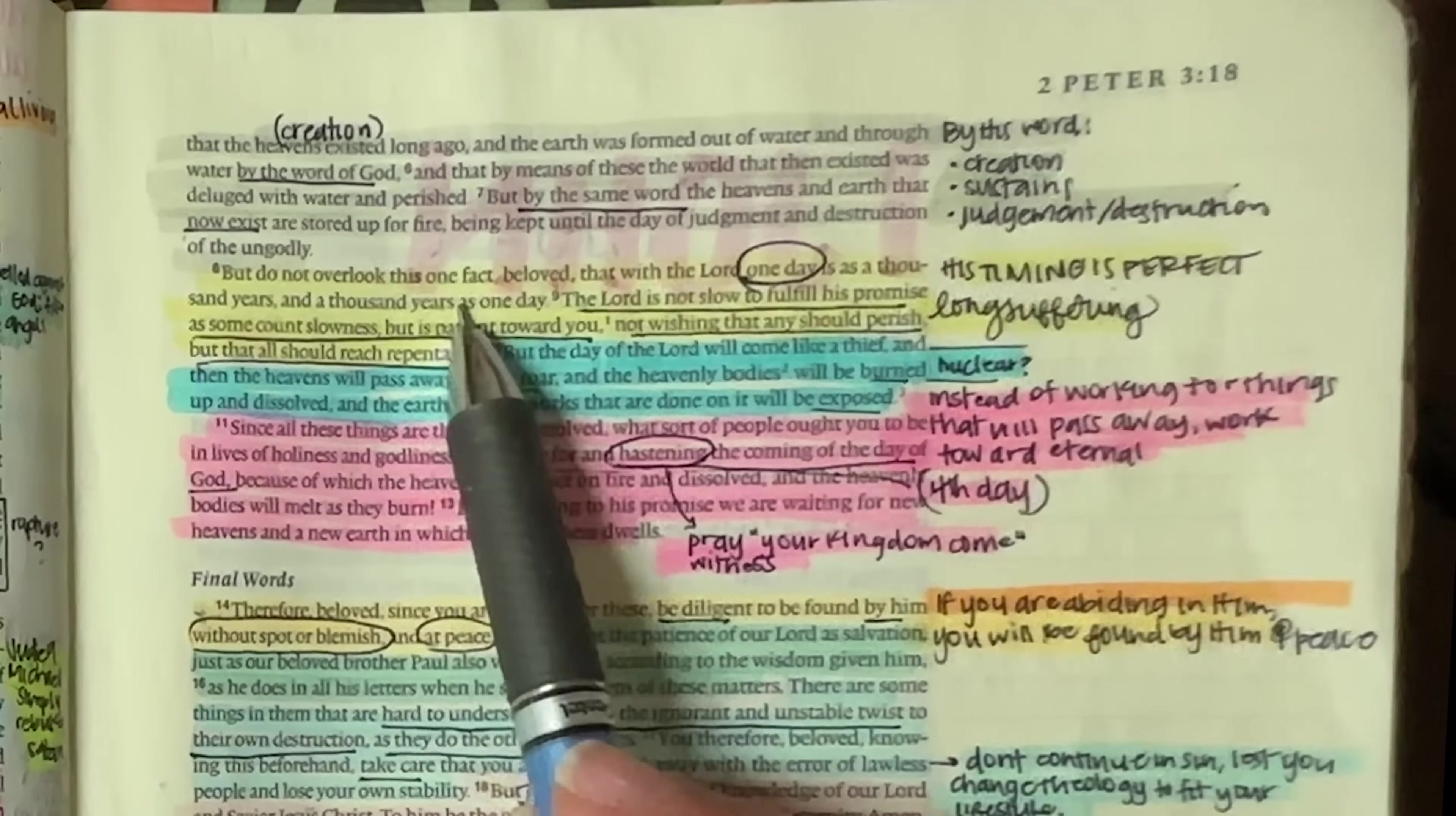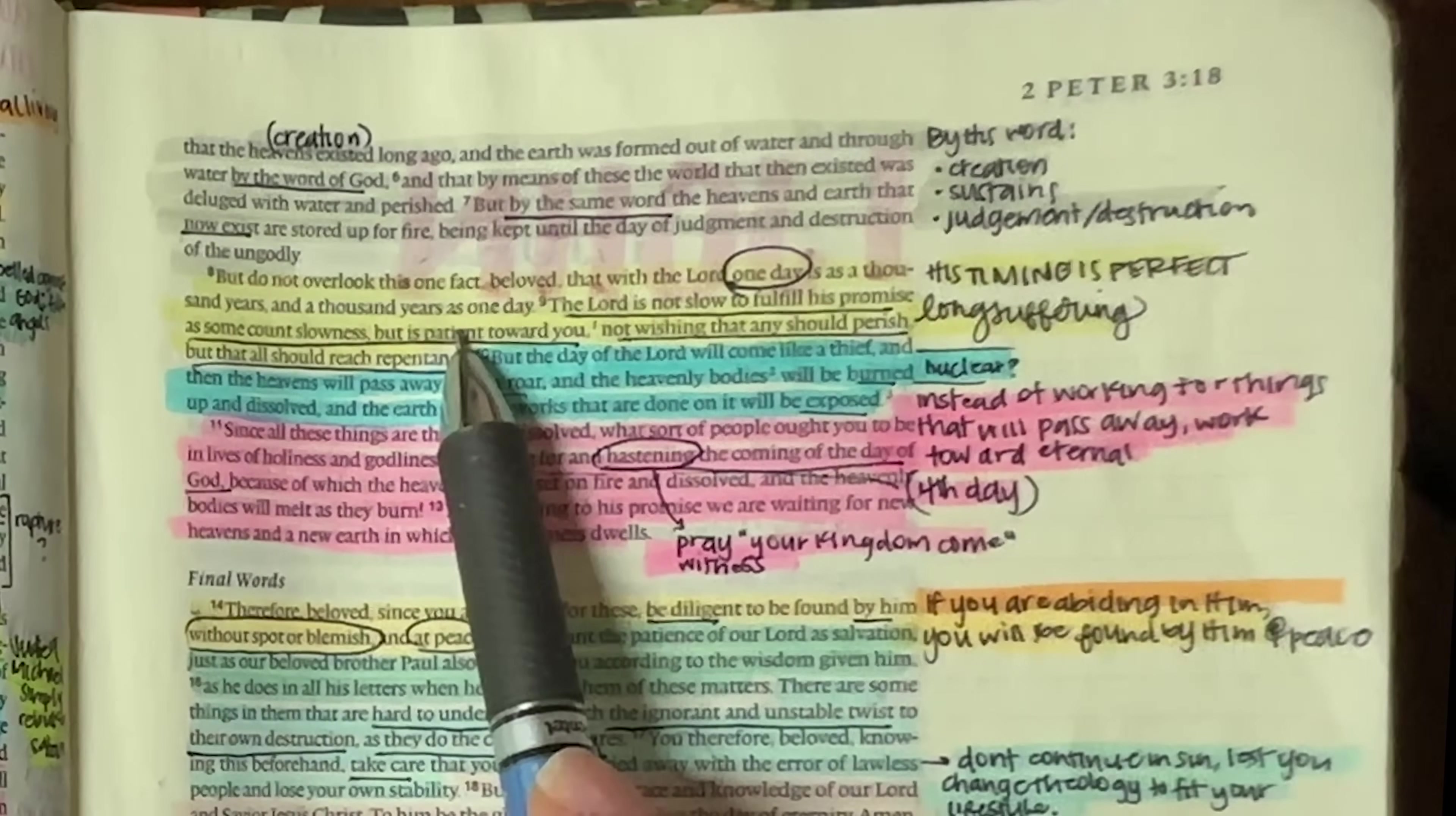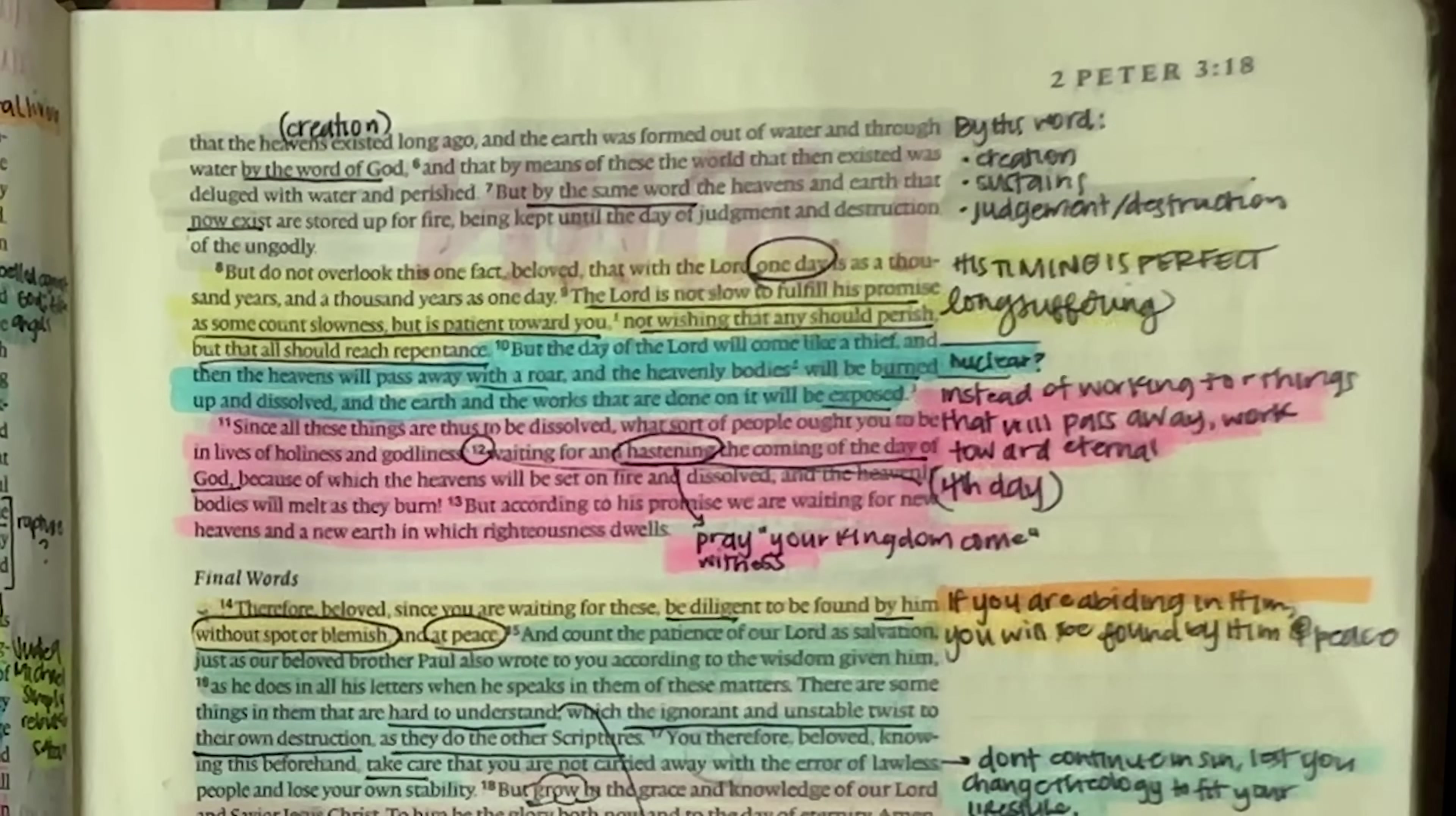But do not overlook this one fact, beloved, that with the Lord one day is as a thousand years and a thousand years as one day. So he is not held to our idea of time is basically what this is saying. It's not saying that one day is technically 1000 years exact. The Lord is not slow to fulfill his promise as some count slowness, but is patient toward you, not wishing that any should perish, but that all should reach repentance. So his timing, no matter what it looks like, it is perfect.